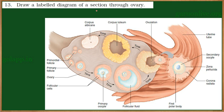We will be learning the structure of a transverse section of an ovary. The ovary is slightly oval in shape. These are the ligaments, and this is the fallopian tube or oviduct.